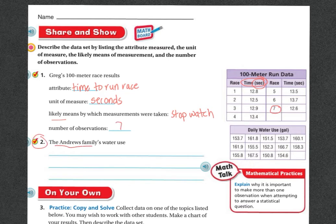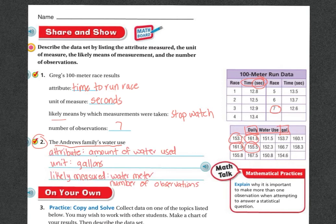Next question. The Andrews family water use. So here we are, the daily water use. Looks like we have all these measurements. And it says daily water use, and right there, gallons, gal, gallons. So the attribute was the amount of water being used. The units, we already said, was gallons. And the likely measure was a water meter. Now the number of observations, one, two, three, four, five, six, seven, eight, nine, 10, 11, 12, 13, 14. So they had 14 observations made.